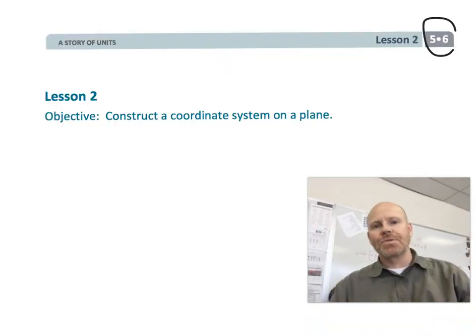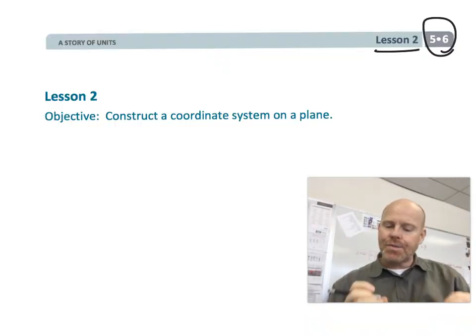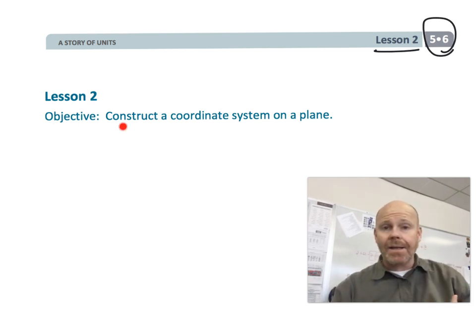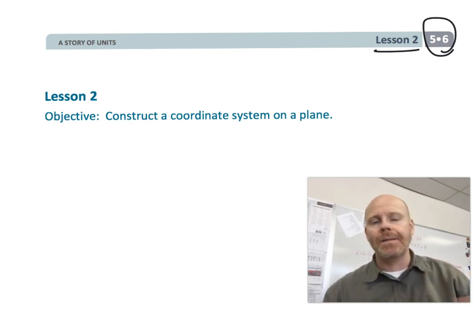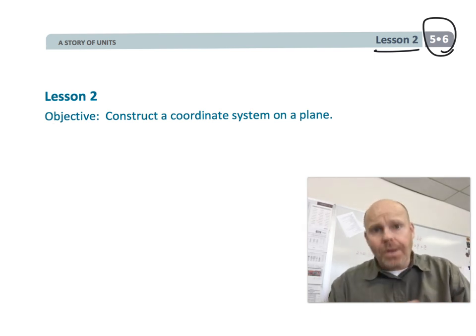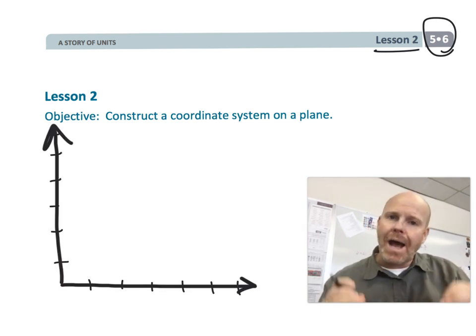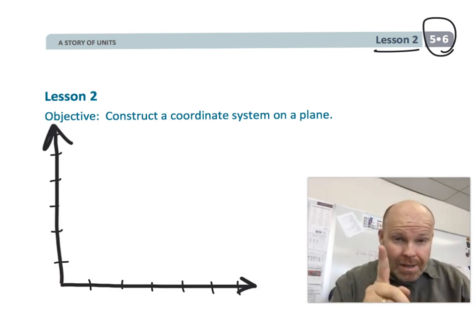All right, this is 5th grade, module 6, lesson 2. And in this lesson, students are going to be actually constructing a typical coordinate system on a plane. Essentially, they're learning the official algorithm for how to plot points in one quadrant.